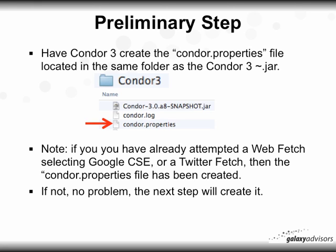If you created a folder for Conor3, you'll certainly see the ConorSnapshot.jar in there. If you started Conor already, you'll have a Conor.log, and if you actually attempted a web fetch, Google CSE search, or a Twitter search, you're going to have a ConorProperties file created. If not, no problem — the next step will help create it. This is where the Twitter keys are going to go.